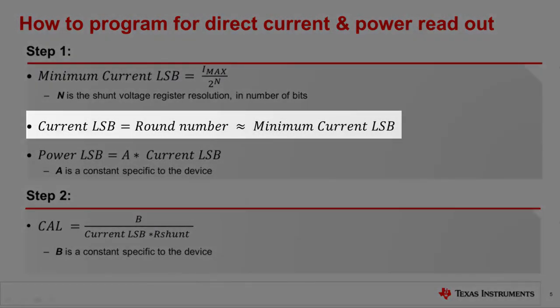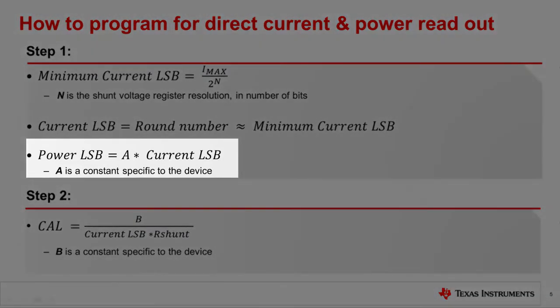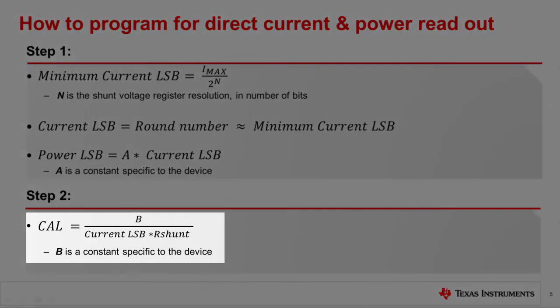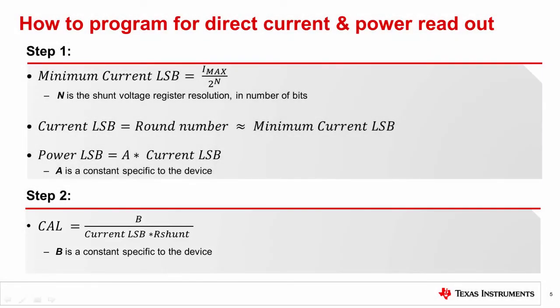It is common to select a current LSB to be a round number larger than the minimum current LSB value to simplify the calculation. Next, the power LSB is calculated as the current LSB times a scalar A, where A is a constant specific to the digital power monitor device. Step two is to compute the calibration register value, or CAL. It is equal to a constant B divided by the product of the current LSB and shunt resistor value. Here, B is an internal fixed value used to ensure correct scaling. Once this calculated calibration value is written to the calibration register, we are ready to start reading the registers for current and power.